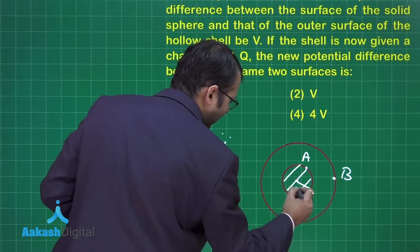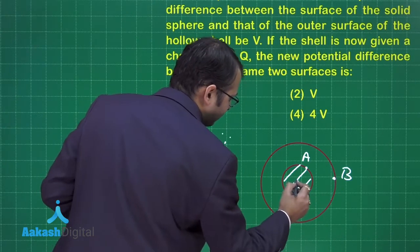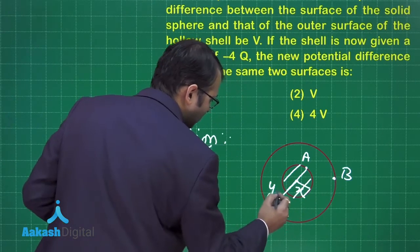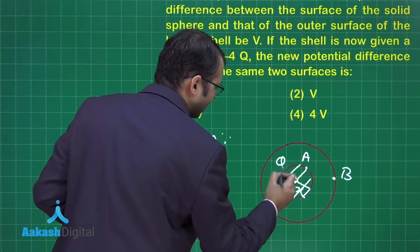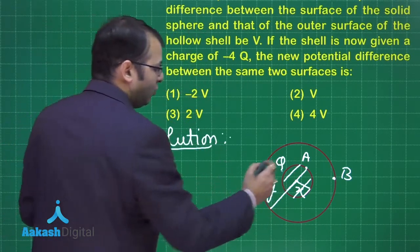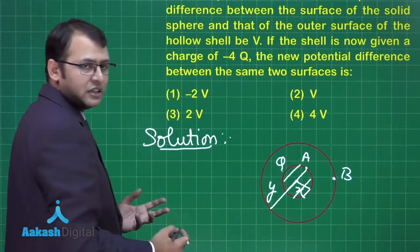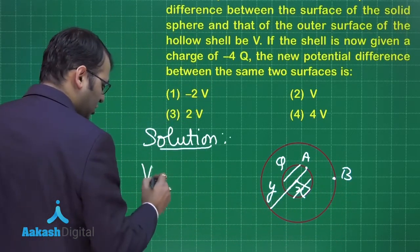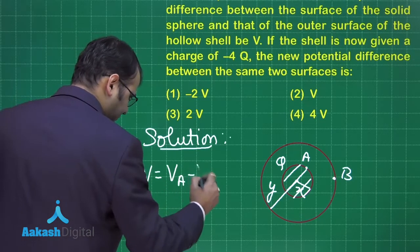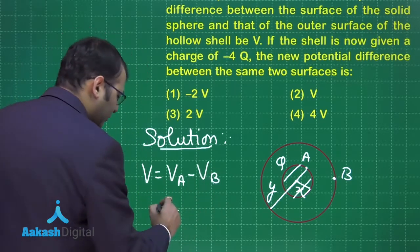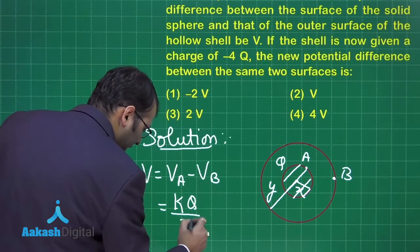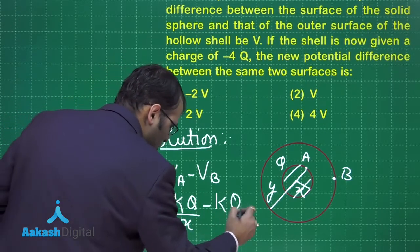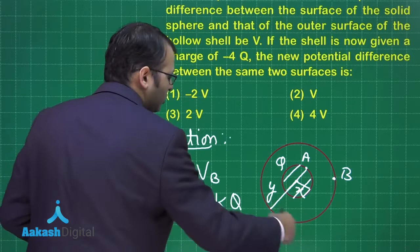Let's mark this as point A and this as point B. The radius of the inner one will be x and the radius of the outer one is y. The charge given here is capital Q. There's no charge on the outer surface, so at this point the potential difference V would equal Vₐ minus Vᵦ, which equals kQ/x minus kQ/y, as the outer shell does not have any charge.